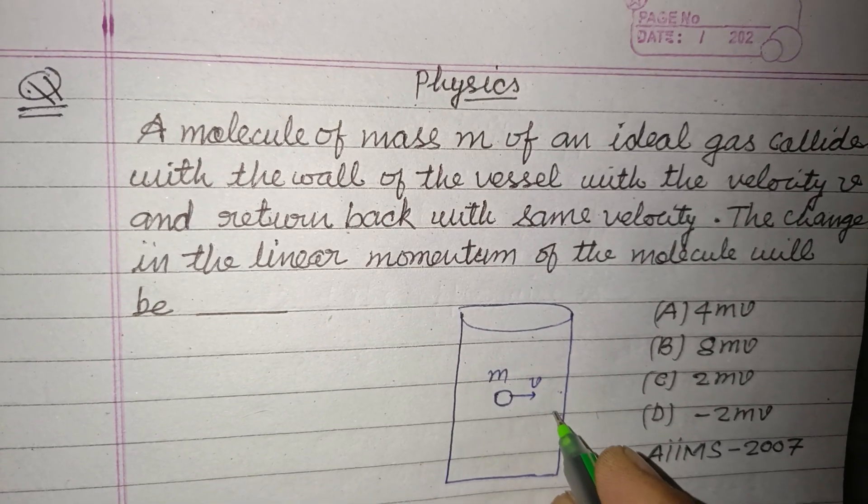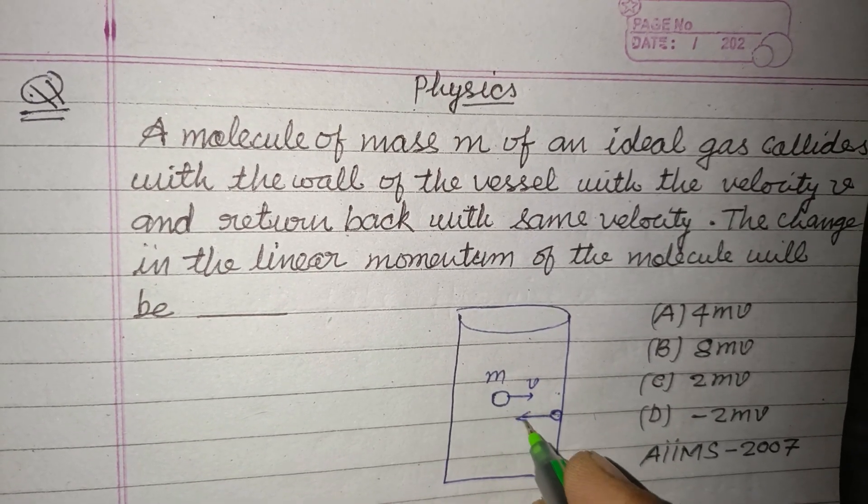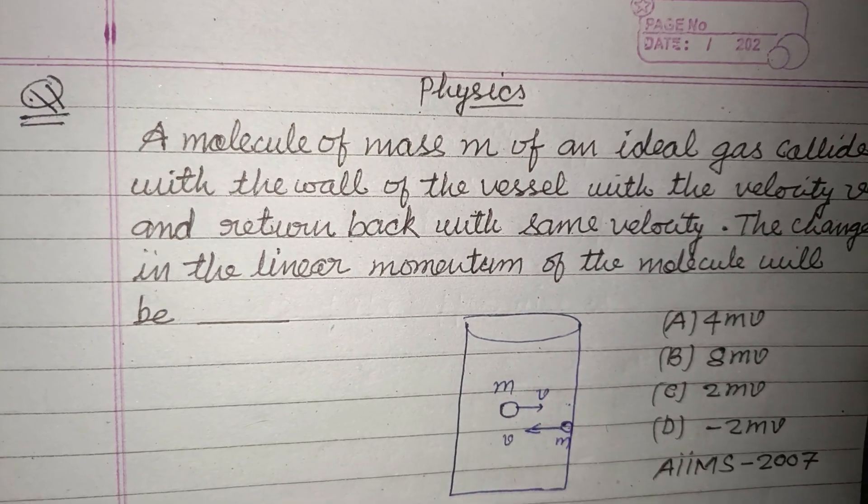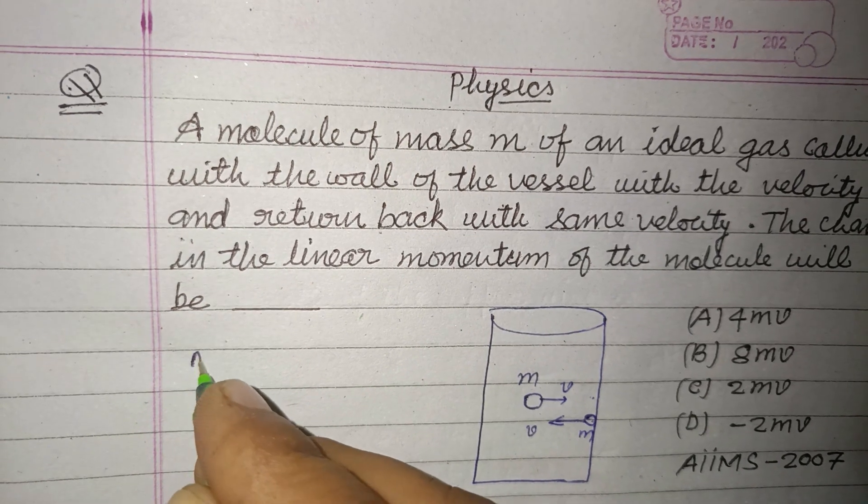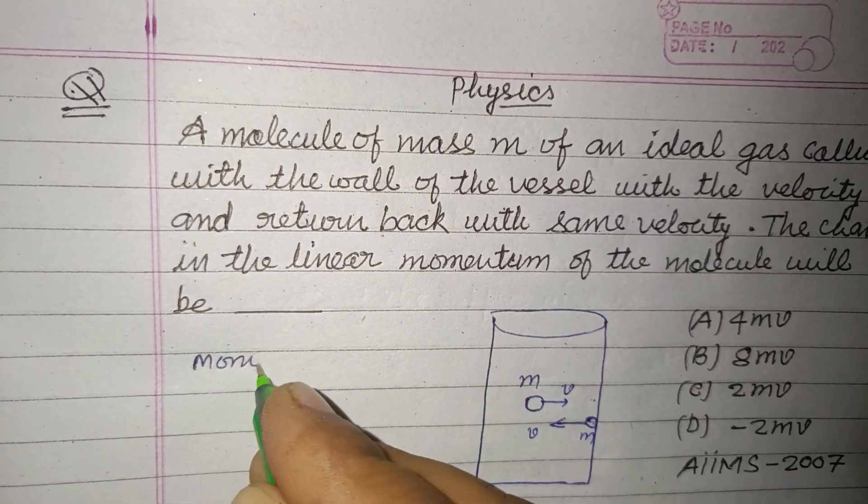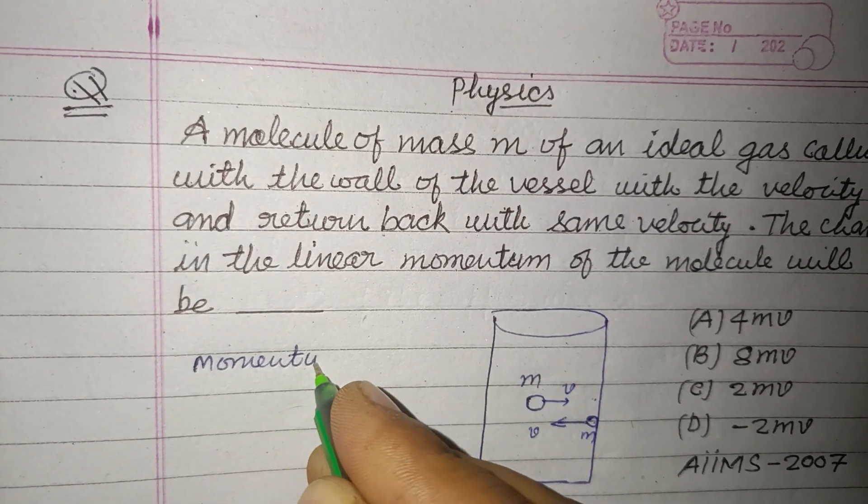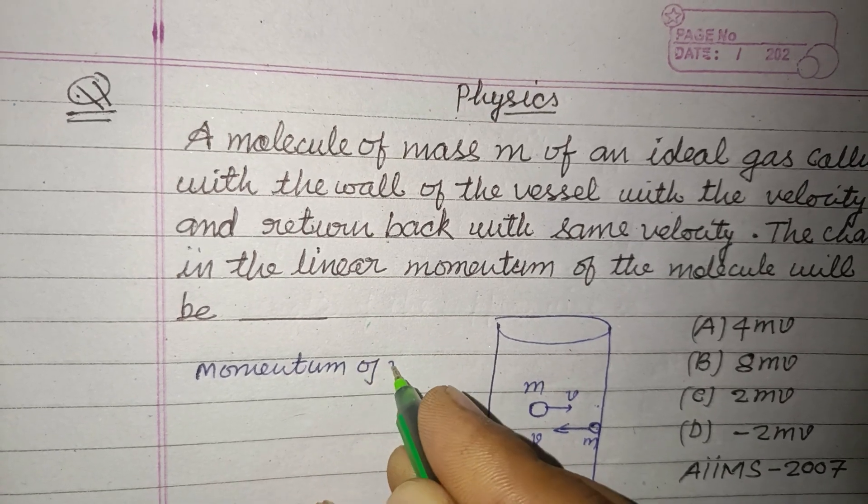The ball comes back with the same velocity V. So initial momentum, momentum of moving particle towards the wall...